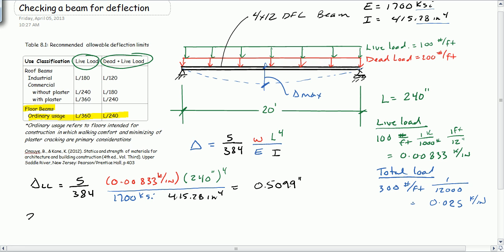Now does this work? Delta live load allowable is equal to L over 360, again from right there. So that's equal to 240 inches divided by 360, and that gives us 0.667 inches, greater than 0.5099. Okay.